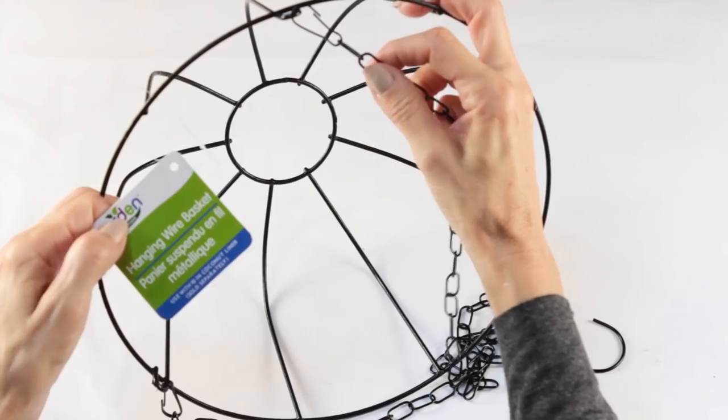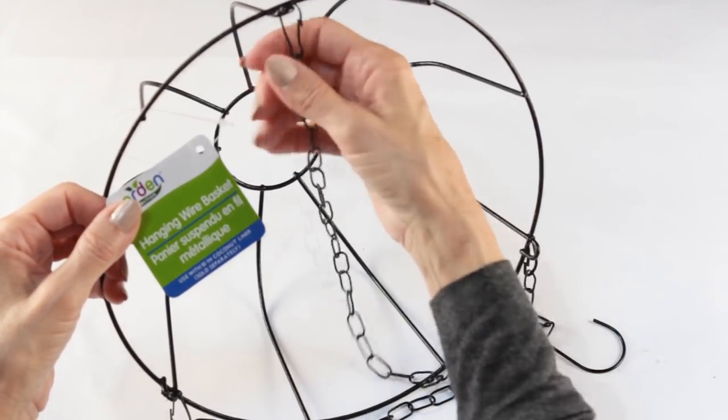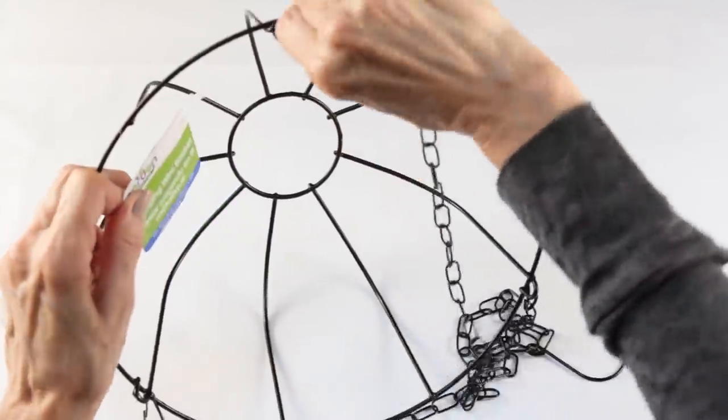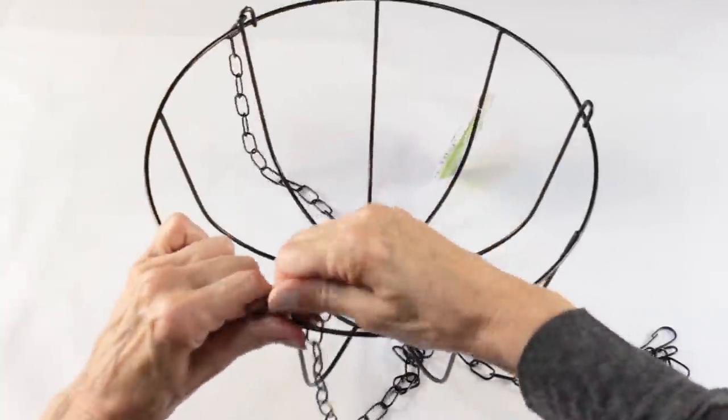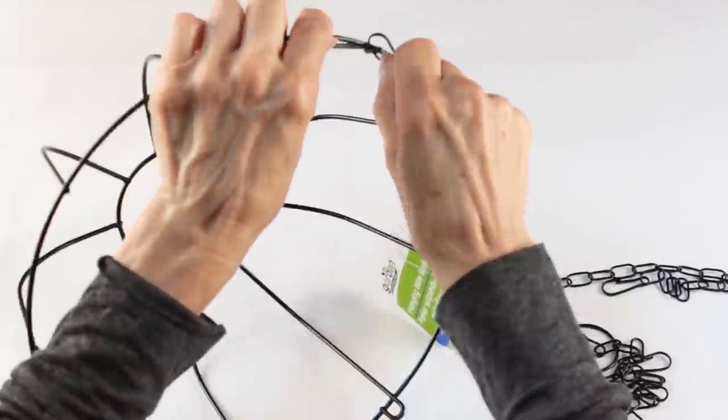The hanger for our bird bath is going to be one of these Dollar Tree hanging wire basket chains. And all you're going to do is just remove the three chains from the basket and then save the basket for another day and another project.